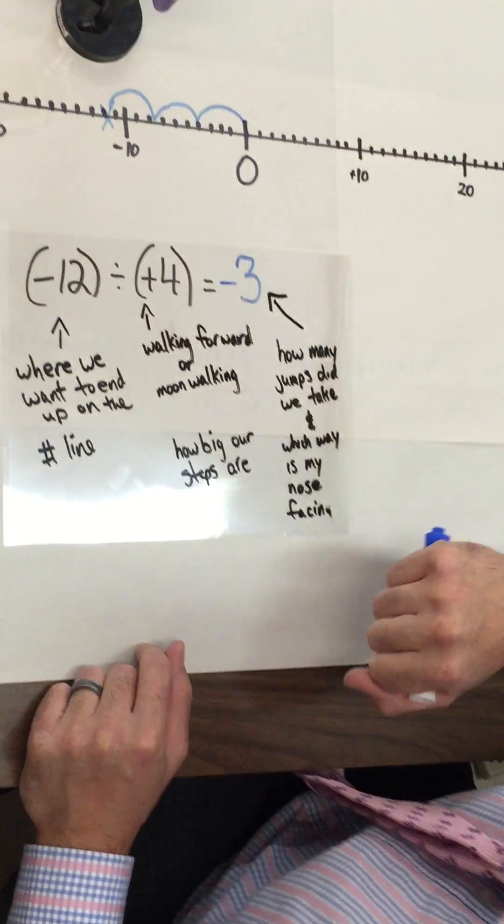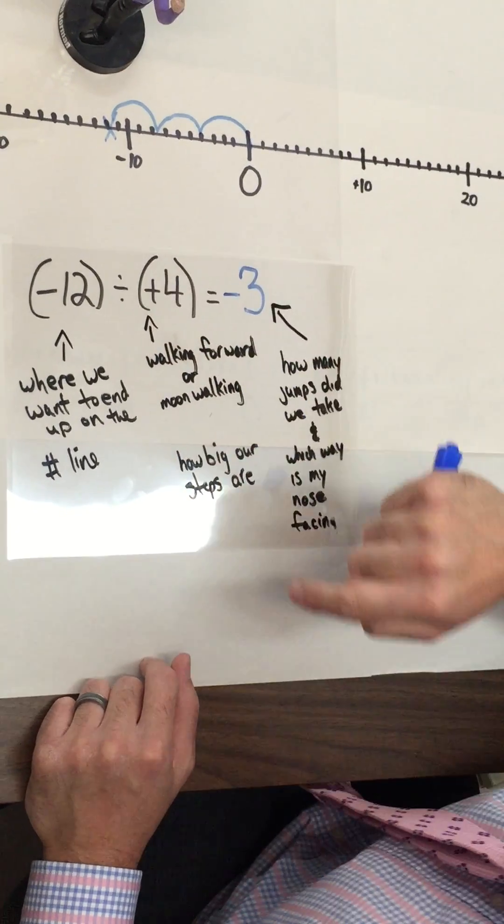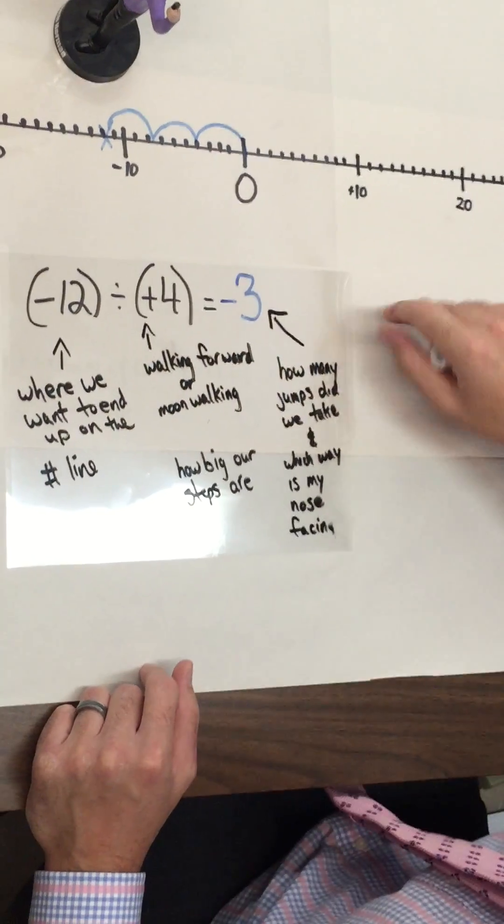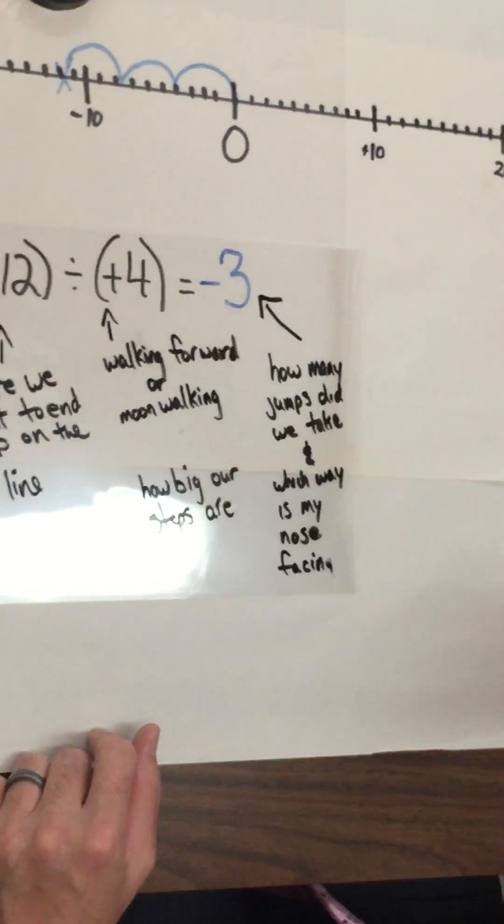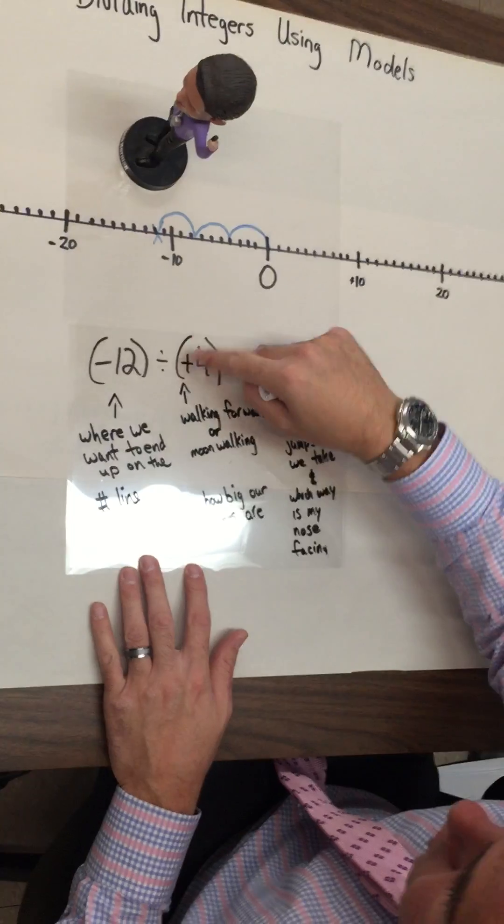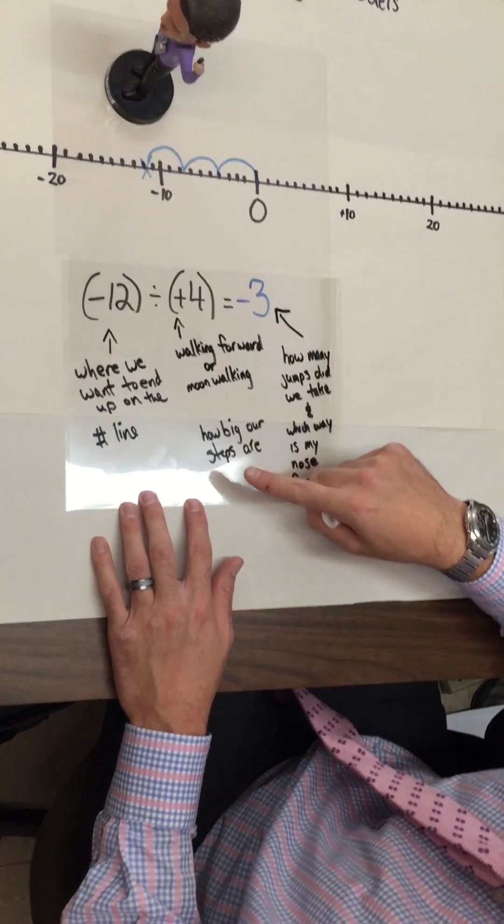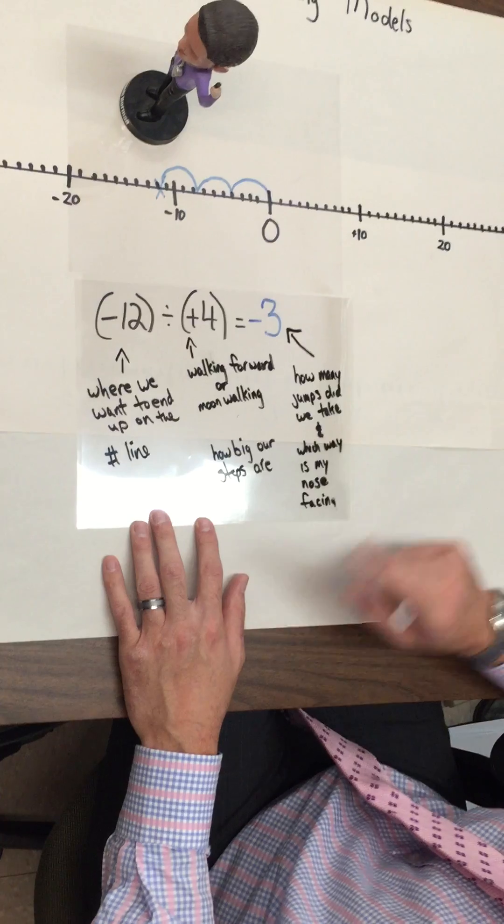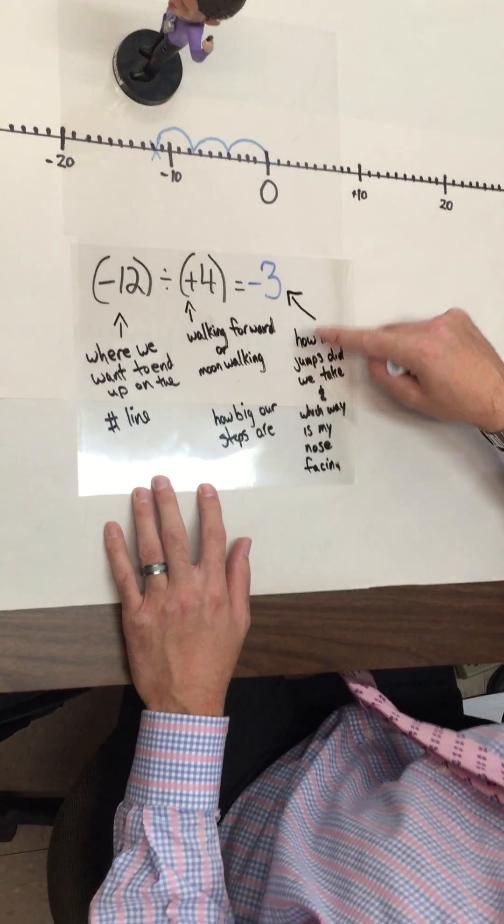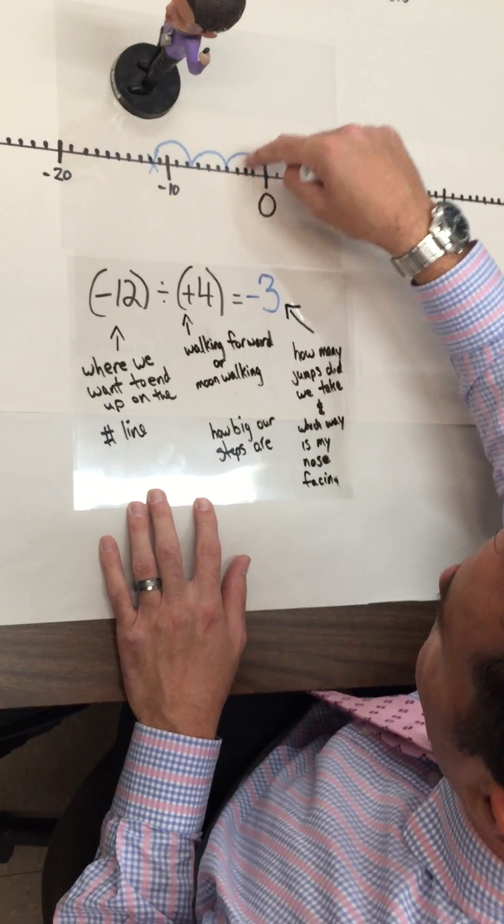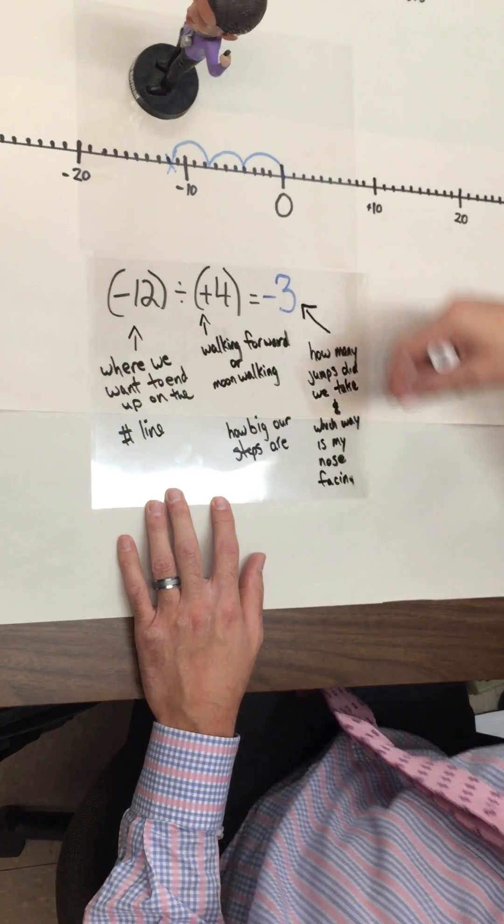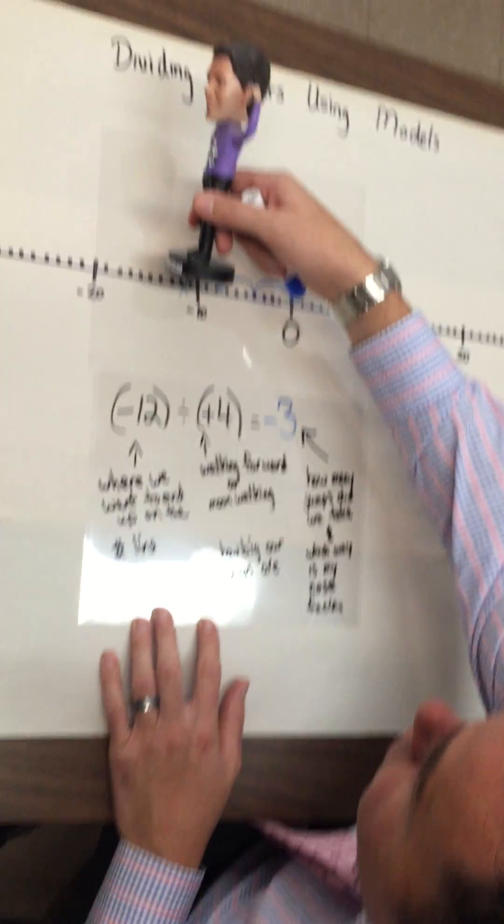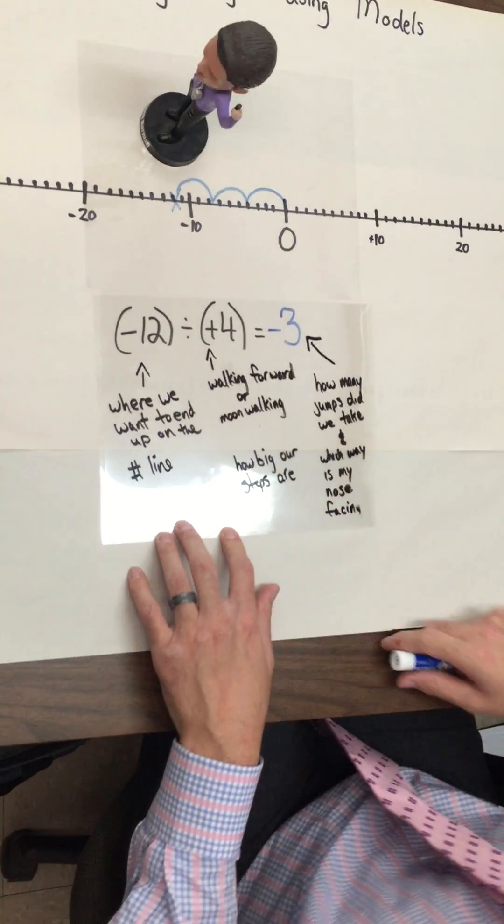The first number tells me where we want to end up on the number line. We represented that with the blue X. The second number tells me whether I'm walking forward or moonwalking. In this case, it was a positive number. So we walked forward. The number itself tells me how big our steps are. So we went by four each time on the number line. My answer then is how many jumps did we take? One, two, three. And which way is my nose facing and it's pointing that way? And that's towards the negative side. So let's try another one.